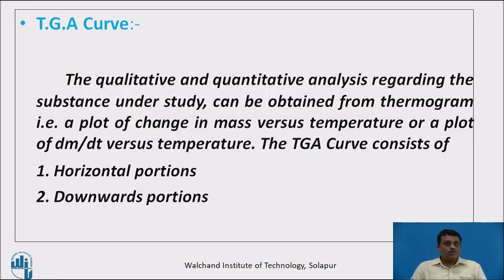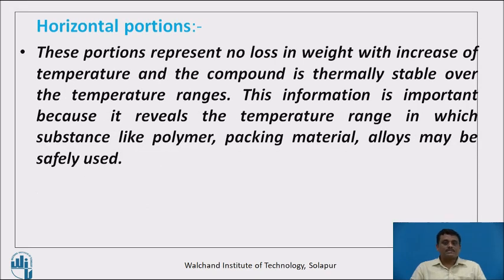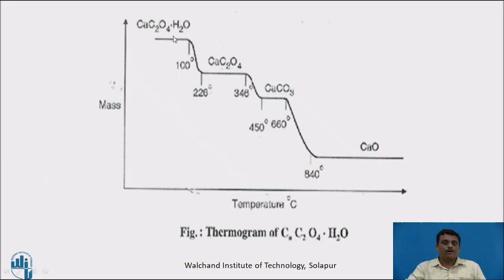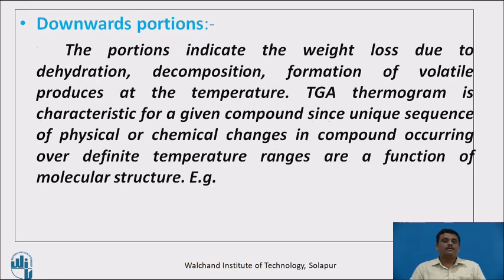There are two types of TGA curves. Qualitative and quantitative analysis can be obtained from the thermogram — a plot of change in mass versus temperature, or dm/dt versus temperature. The TGA curve consists of horizontal portions and downward portions. Horizontal portions represent no loss in weight with an increase in temperature, meaning the compound is thermally stable over that temperature range. This reveals the temperature range in which substances like polymers, packing materials, and alloys may be safely used.